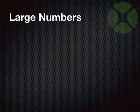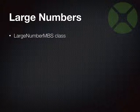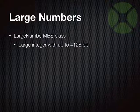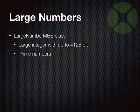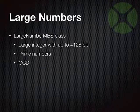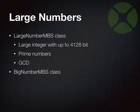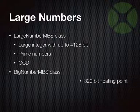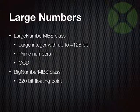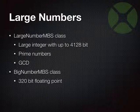We got classes for large numbers. Sometimes you may need a large number to calculate something. We have the LargeNumberMBS class — an integer with 4,000 bits. You can calculate prime numbers or bank account balances. It supports negative numbers and various algorithms like greatest common divisor. For floating point, we have BigNumberMBS which is a 20-bit floating point number — big enough to give you a hundred digits before the decimal point, much more than a normal double. Some people need that for scientific calculations.